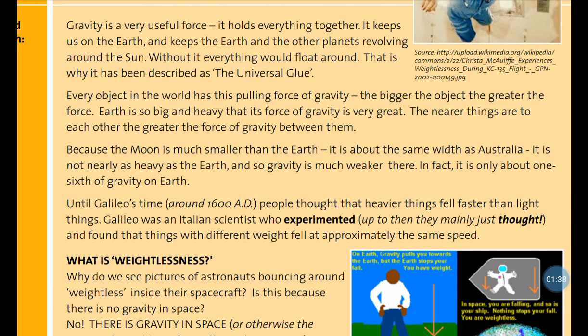The Moon is much smaller than the Earth — it's about the same width as Australia. Because of this, it is not nearly as heavy as the Earth, and so gravity is much weaker there. In fact, gravity on the Moon is only about one-sixth of gravity on the Earth.